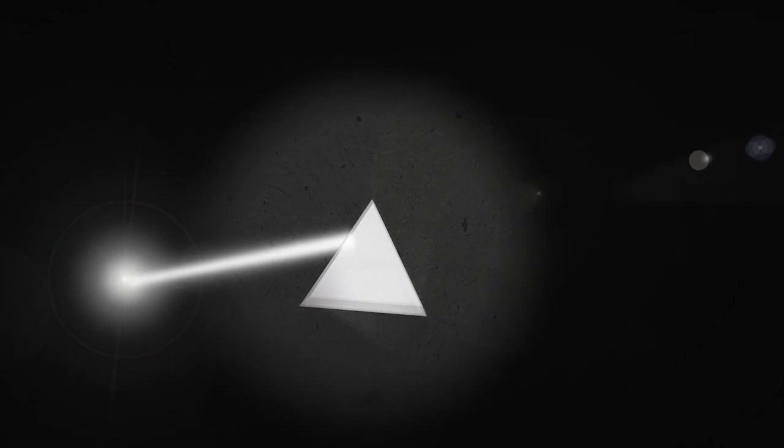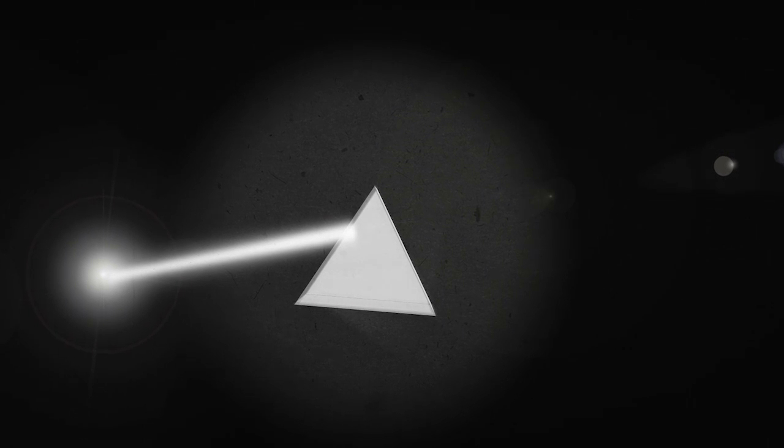Light slows down as it goes from air to glass and causes the ray of light to bend. This is called refraction.